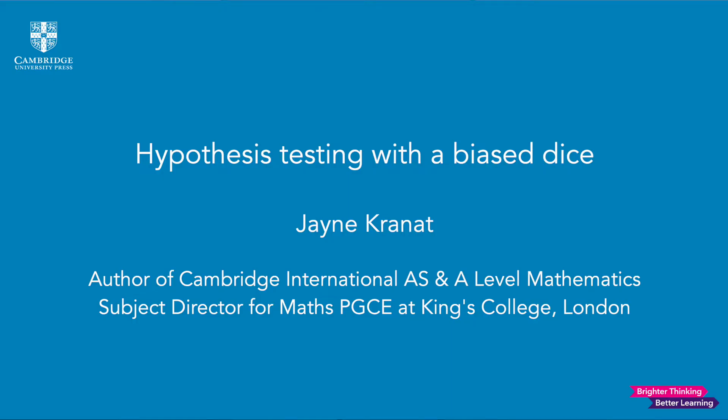My name is Jane Cronat. I am the subject director for the mathematics PGCE at King's College London. I am also the author for the Cambridge International AS and A level mathematics course book, Probability and Statistics 2.